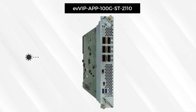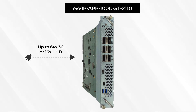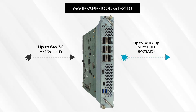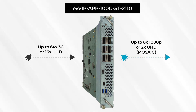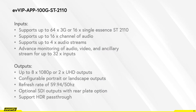EVVIP 100G is capable of processing up to 64 3G inputs or up to 16 12G inputs, single assets. It supports up to 16 channel audio, supports up to 4 audio streams, with advanced monitoring of video, audio, and ancillary data, up to 32 inputs.